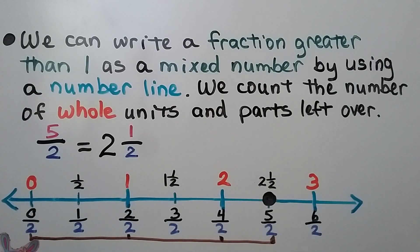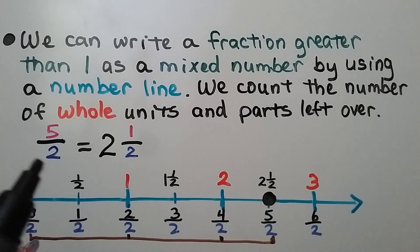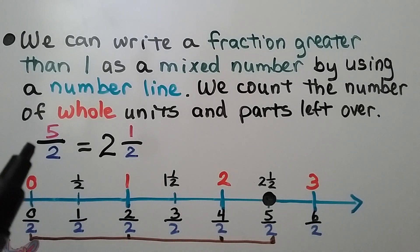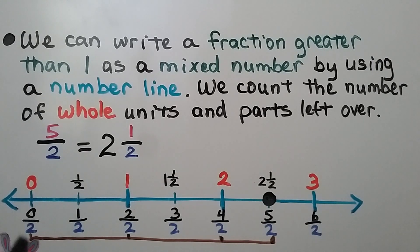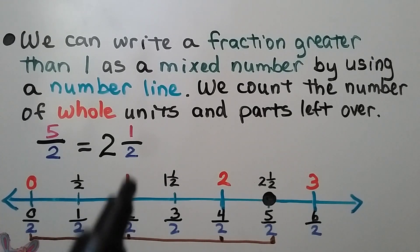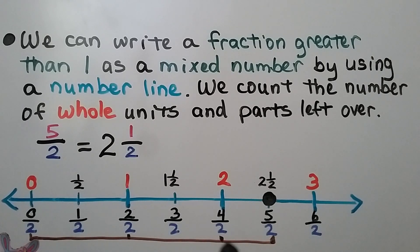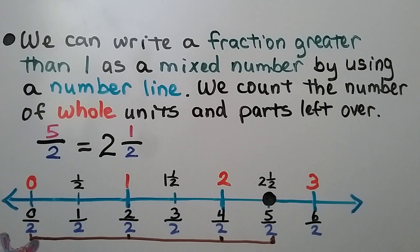We can write a fraction greater than one as a mixed number by using a number line, counting the number of whole units and parts left over. We want to turn five halves into a mixed number. Our number line goes from zero halves to one half, two halves — that's one whole — three halves, four halves — that's two whole. We have five halves, which equals two and a half.